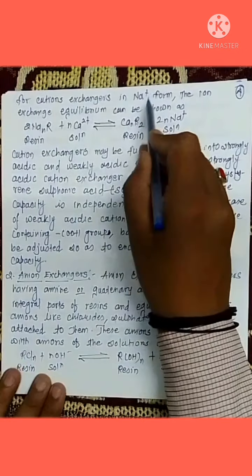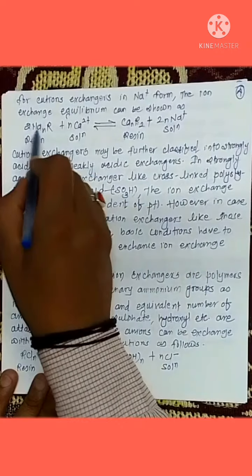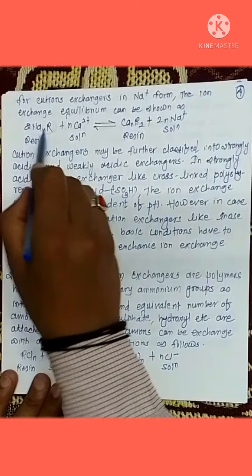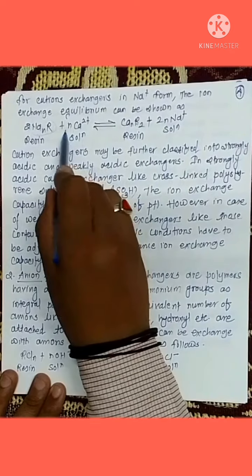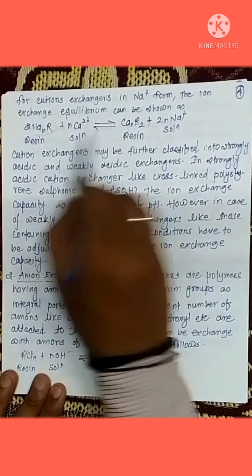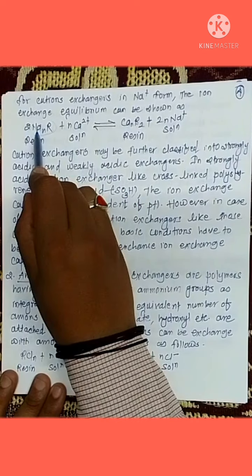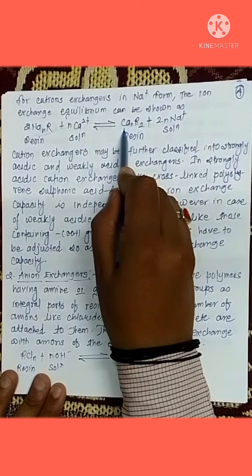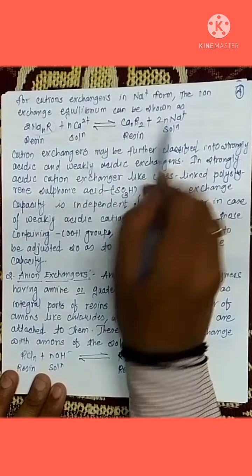For a cation exchanger in sodium form, the ion exchange equilibrium can be shown as follows. This resin is the sodium form, so it contains sodium ions attached to the polymer. When it comes in contact with a solution having Ca2+ ions, the sodium ions get replaced and calcium ions join the resin, while Na+ ions come into the solution. So the resin becomes attached to calcium ions and Na+ goes into the solution.